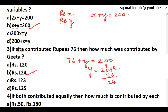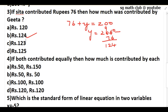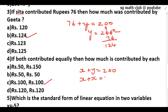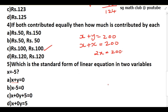If both contributed equally, that means 100 + 100 = 200, or we can write x + y = 200 with x = y. Replacing: 2x = 200, so x = 200 ÷ 2 = 100. Each of them contributed rupees 100.